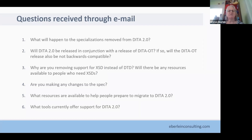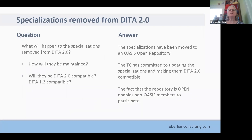We've got a list of about six questions received through email. Some were particularly author-focused and we addressed those directly by email. One question we received from multiple places is: what is going to happen to the specializations that are removed from DITA 2.0? Here we're really talking about the learning and training specialization, the machinery task, and the task prerequisites domain used in the machinery task.